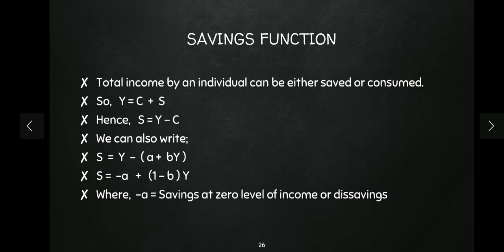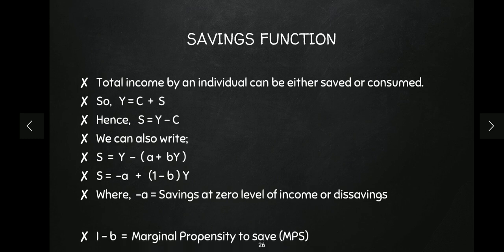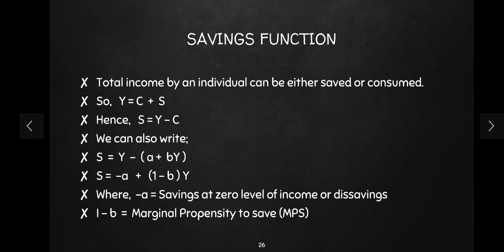Here, −a represents dis-savings. Remember, 'a' was autonomous consumption — what you consume at zero level of income. If you are consuming something at zero income, that means you have negative savings — that is dis-savings. And (1−b) is the marginal propensity to save (MPS). Just as 'b' is the fraction of income consumed, (1−b) is the fraction of income saved. This is called marginal propensity to save.